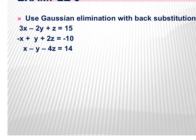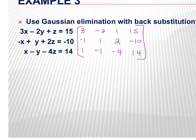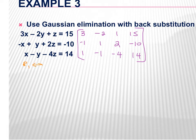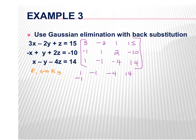For the 3-variable example, I first write out the matrix: 3, negative 2, 1, 15; negative 1, 1, 2, negative 10; and 1, negative 1, negative 4, 14. The first goal is a 1 in the top left, so I'm going to switch row 1 and row 3. You could multiply row 1 by 1/3, but that gives unwanted fractions. So the matrix becomes: 1, negative 1, negative 4, 14; negative 1, 1, 2, negative 10; and 3, negative 2, 1, 15.